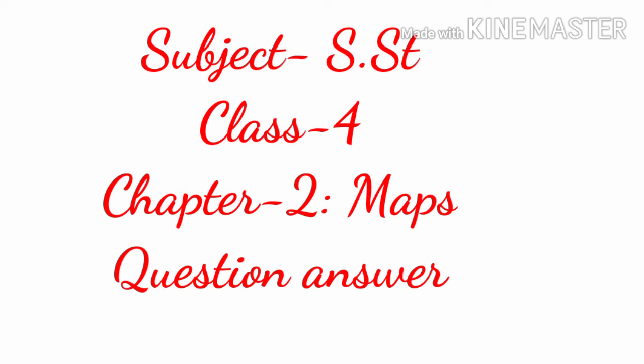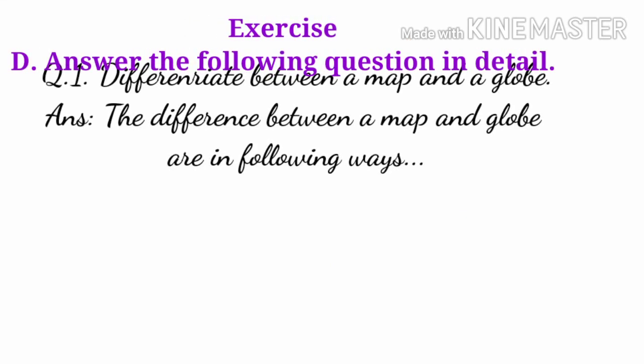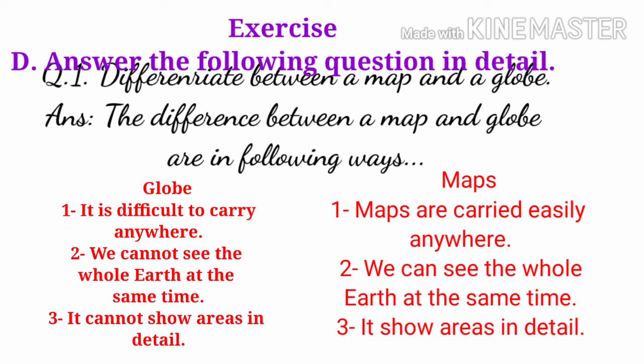We will do question answer E — answer the following questions in detail. But before doing the questions, take out your SST copy. Start question answer from a new page. In the first line write the chapter number as well as the chapter name: Maps. Leave the next line, then start writing question number D — answer the following questions in detail.